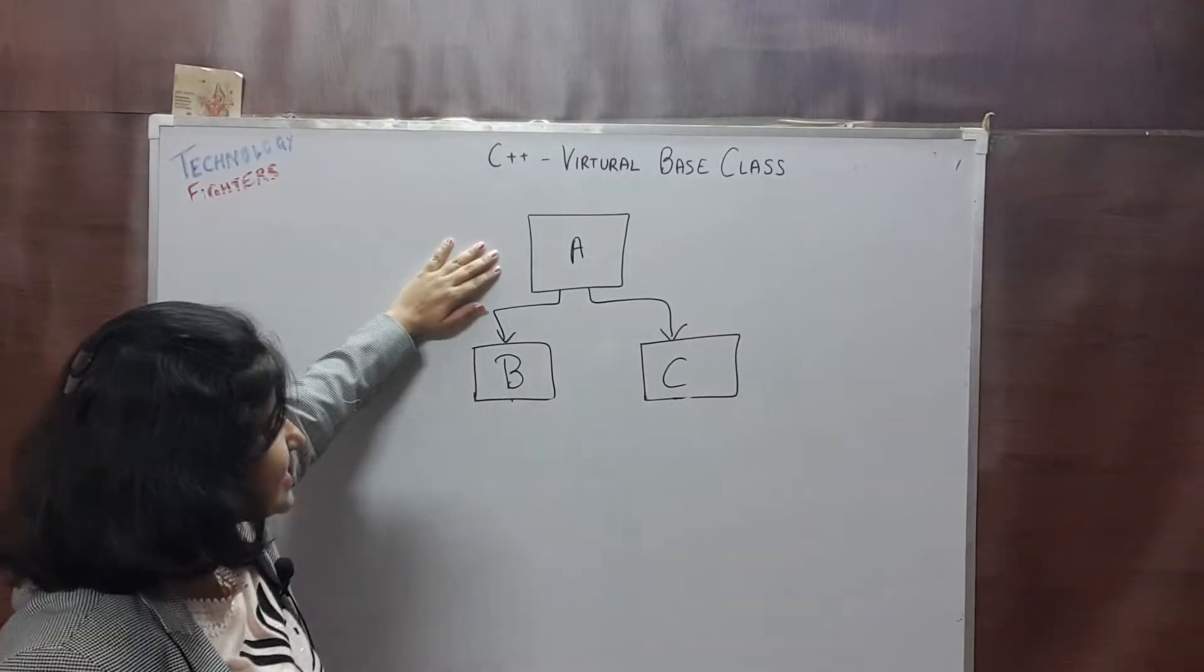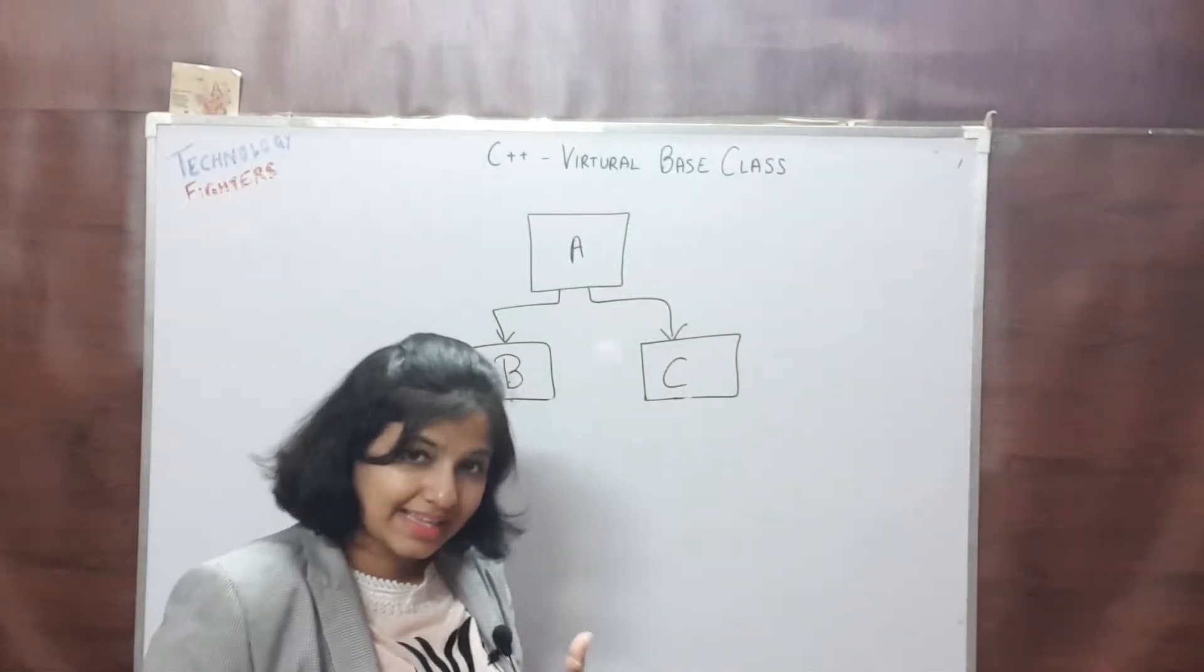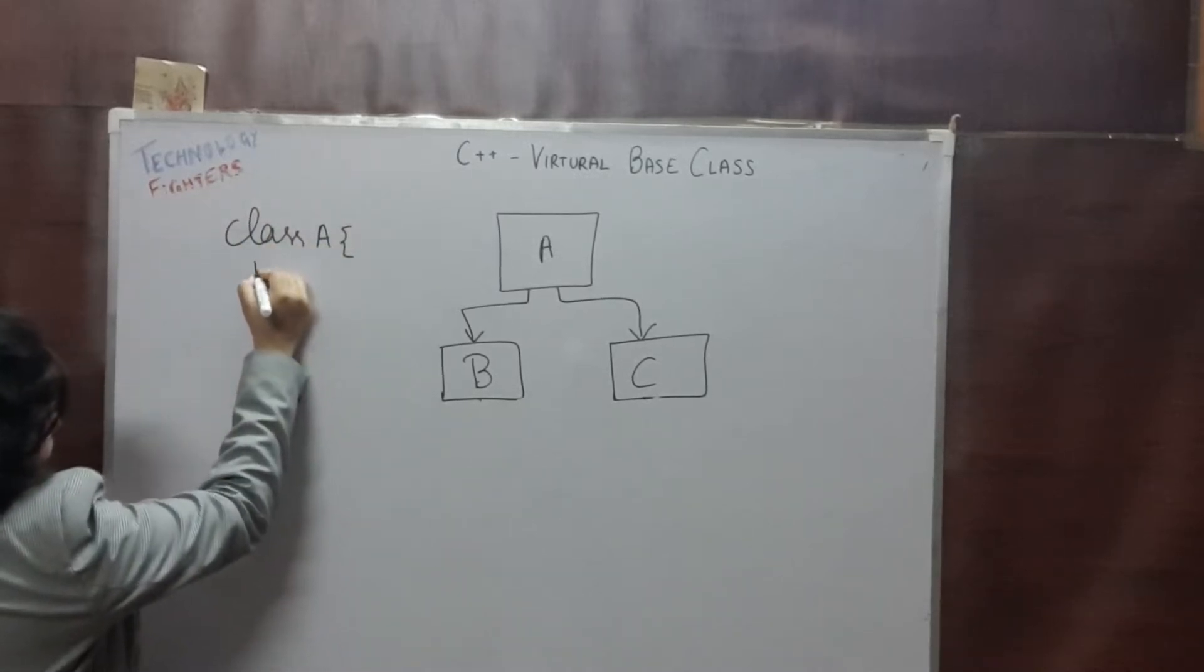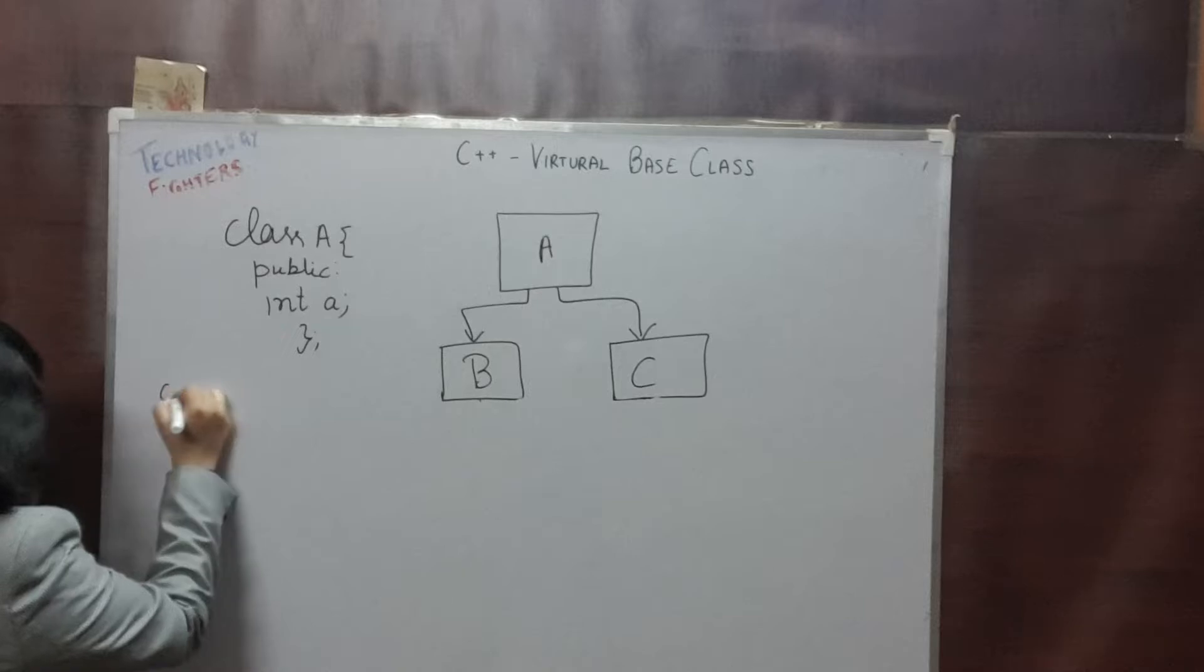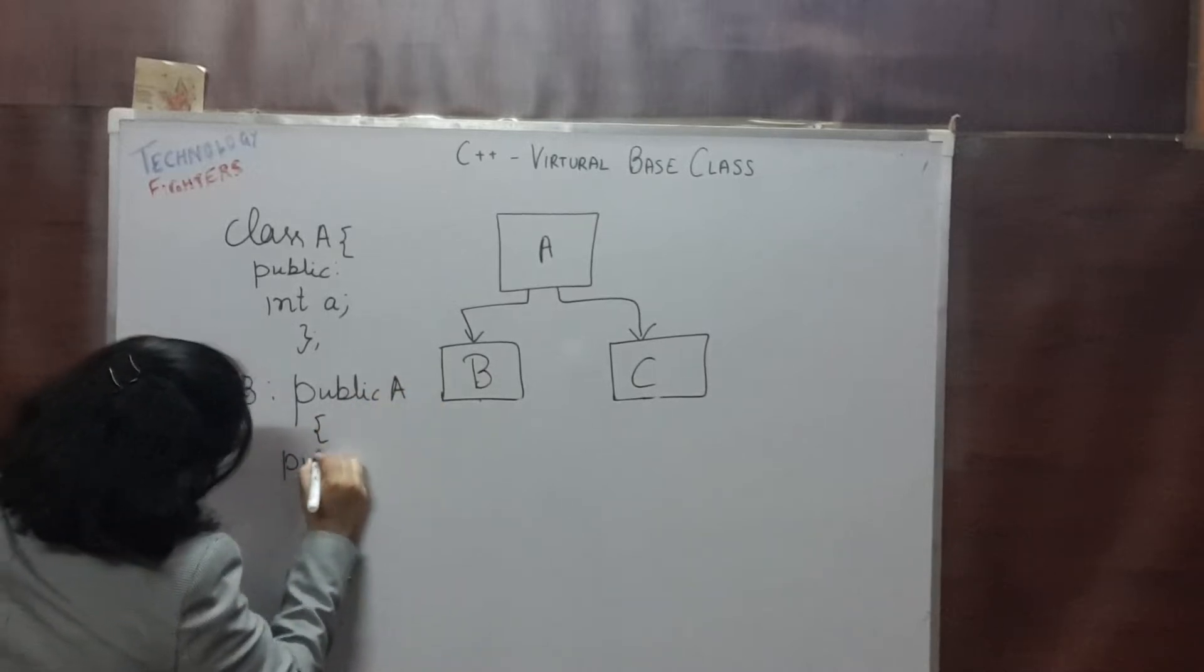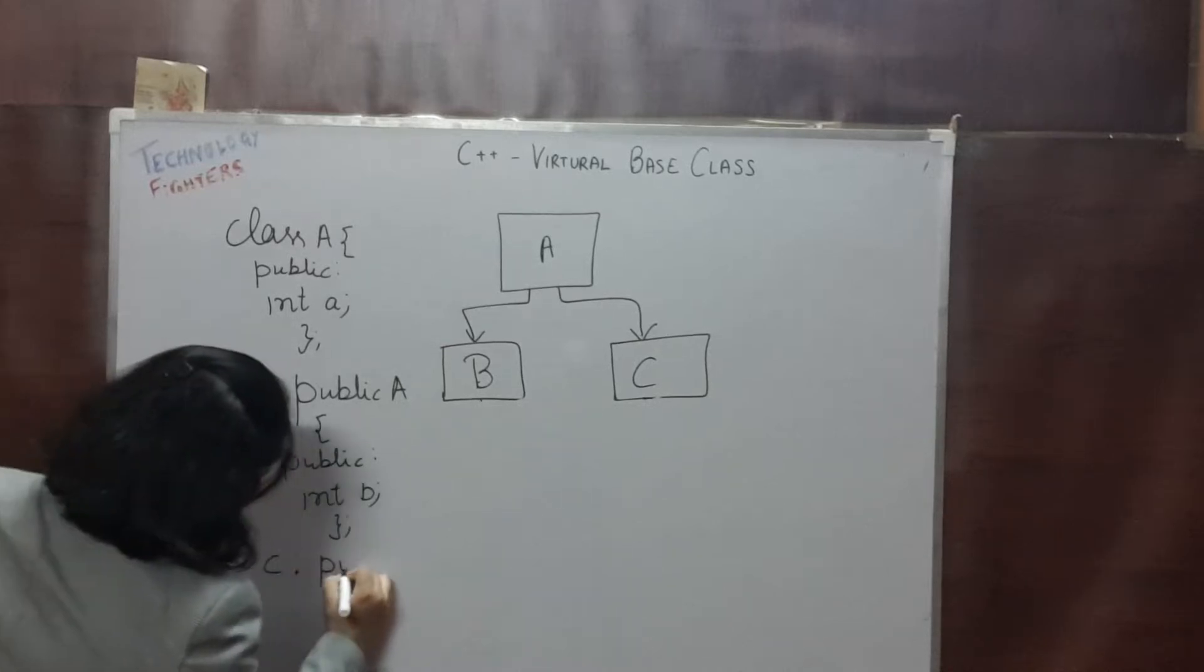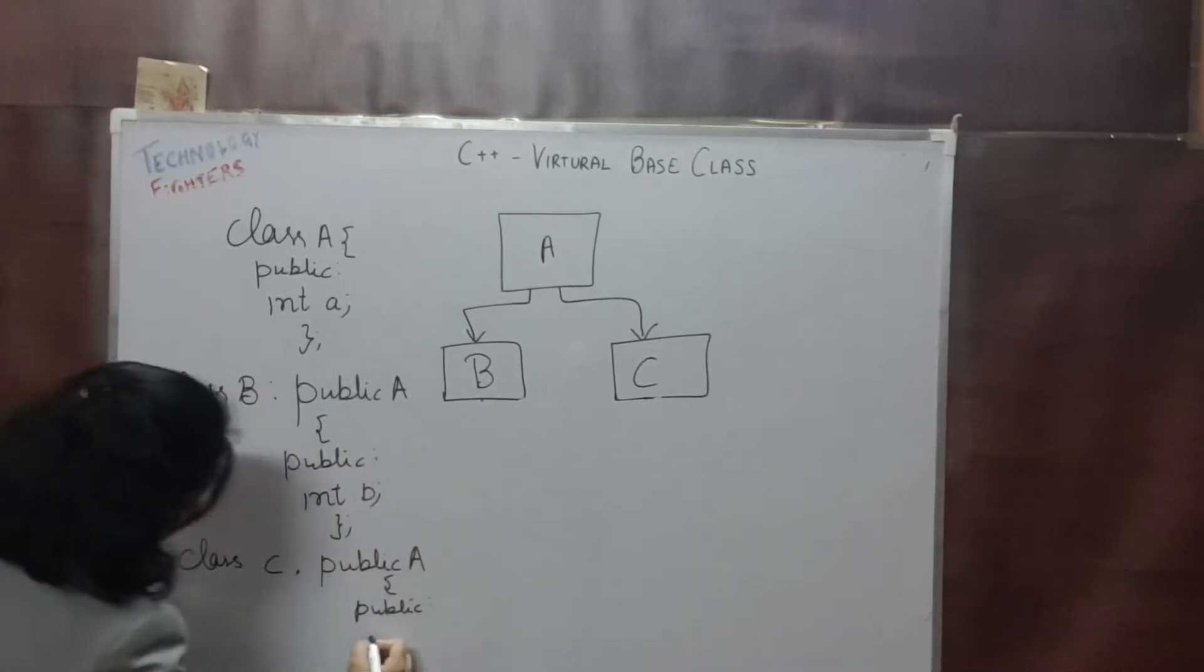We have seen that class A is derived from class B and class C. In this case, we have no problem. Because if class A contains one variable A, class B is derived from class A in public mode and in public section it contains one variable B. Next, class C is derived from class A in public mode, and in public section it has one variable C.